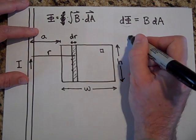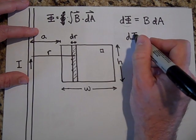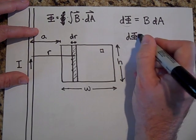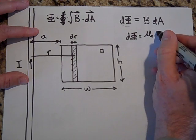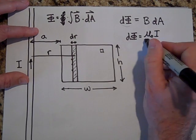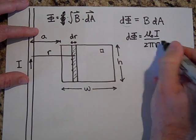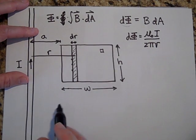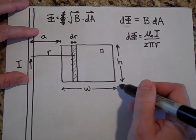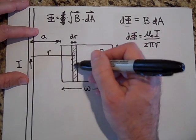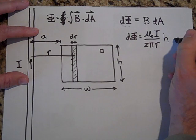So the little flux is going to be equal to B there — which we've already calculated as mu naught I over 2πR — and the DA is going to be the height times the width, so it's H dR.